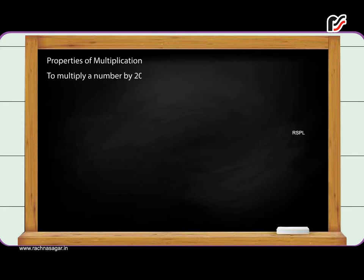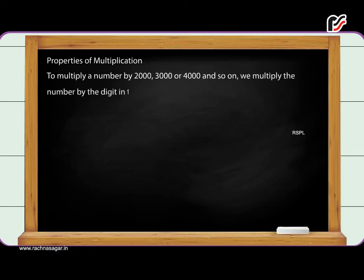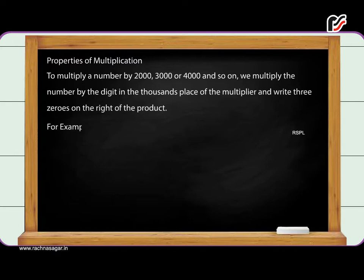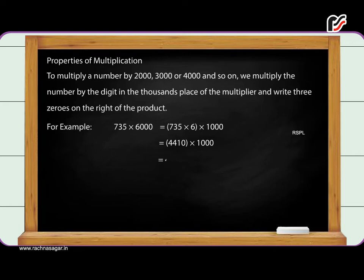To multiply a number by 2,000, 3,000, or 4,000 and so on, we multiply the number by the digit in the thousands place of the multiplier, and write three zeros on the right of the product. For example, 735 into 6,000 is equal to 735 into 6 into 1,000 is equal to 4,410 into 1,000 is equal to 44,10,000.